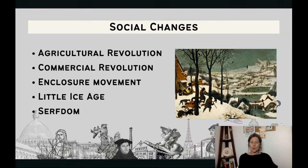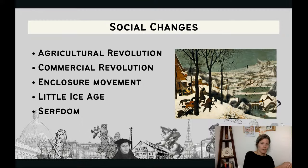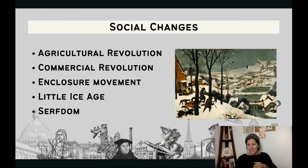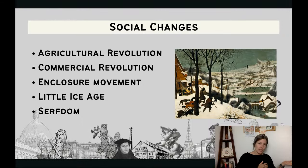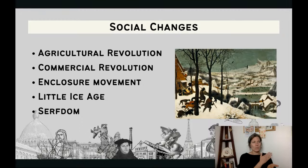Social changes due to trade — these continue for the next couple hundred years. The agricultural revolution happens, meaning people started learning how to plant better, and we now have nutrient-dense crops from the Americas in Europe, increasing the food supply. The commercial revolution is this slow change in how economic systems are structured in Europe, as Europe marches toward a market economy over the next couple hundred years.